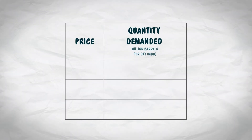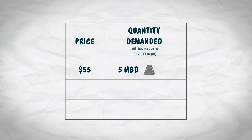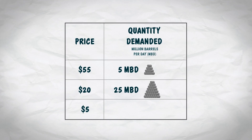Here's a hypothetical table of data that shows the amount of oil bought at different market prices. At a price of $55 per barrel, the quantity of oil demanded would be 5 million barrels a day. At a lower price, say $20 per barrel, the quantity of oil demanded is going to be higher — say 25 million barrels a day. And at an even lower price, $5 per barrel, the quantity of oil demanded would be 50 million barrels a day.